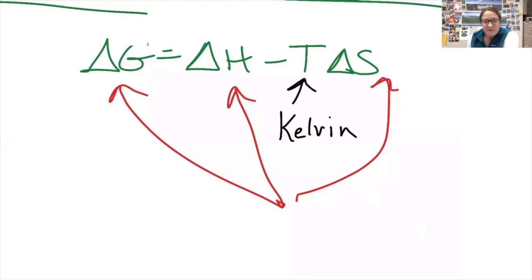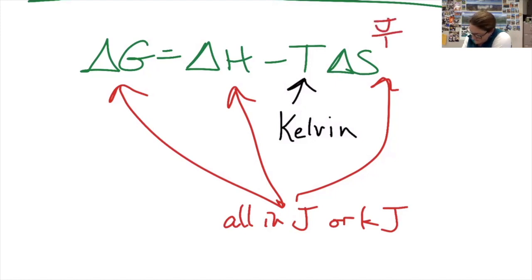One thing you need to be careful of is all are in joules or kilojoules. And the default for one of them is not the same as the default for the others. If you're to calculate it, normally you're given delta S in joules per mole Kelvin, whereas heat is usually in kilojoules per mole. So you need to make sure that those two are both in joules or both in kilojoules before you plug them in.